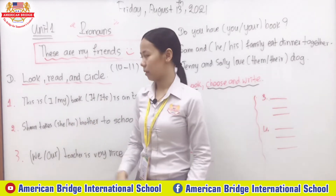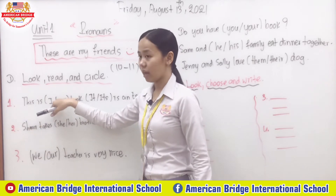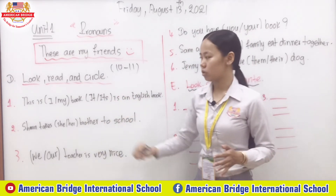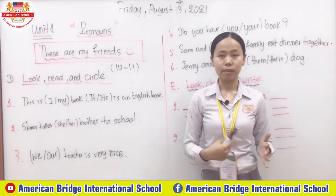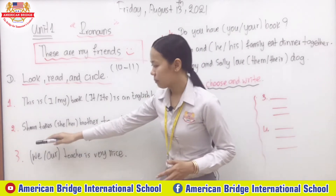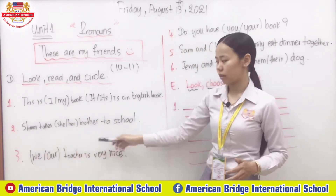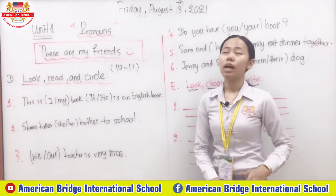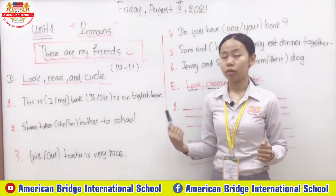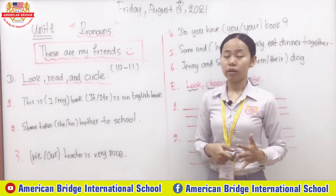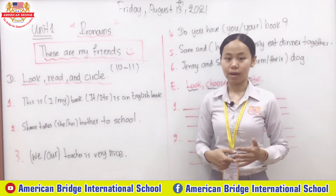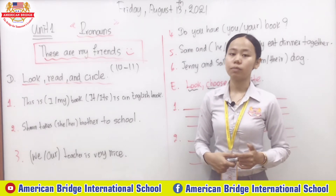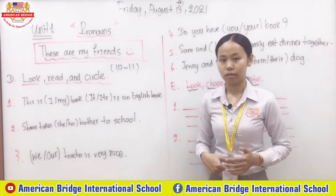For example, in the first statement we have 'I' or 'my' for the book, and 'it' or 'it's' for the English book — combining possessive adjective and subject pronoun. Number two: Sharon takes her or she brother to school. Number three: we or our teacher is very nice. For possessive adjective, it's always located before the noun it refers to, while subject pronoun refers to the one performing the action.